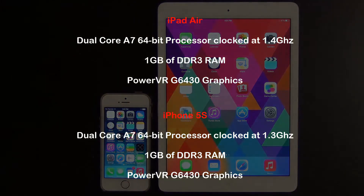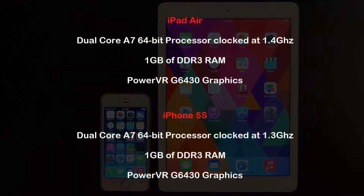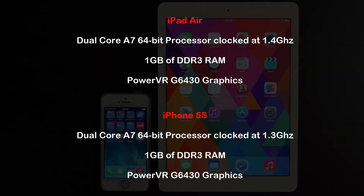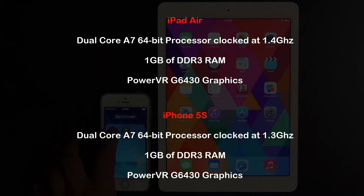Both of these devices sport an A7 64-bit dual-core processor. The only difference is that the iPad is clocked at a higher frequency at 1.4 gigahertz and the iPhone is at 1.3 gigahertz. They both have 1 gigabyte of RAM.